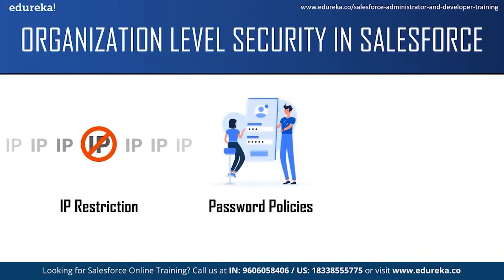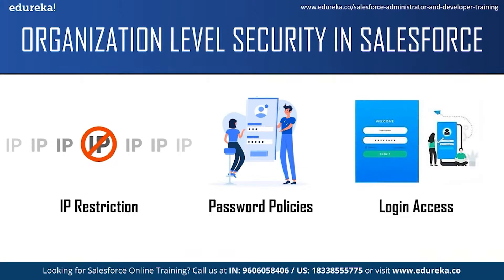Password policies let you specify how long before a user's password expires and the type of password required. For example, you can require passwords to be at least 10 to 12 characters long, contain at least one symbol, and include both uppercase and lowercase letters and numbers. Login access lets you specify the hours during which users can log in — for example, preventing certain users from logging in on weekends or limiting night shift employees to their shift hours only.